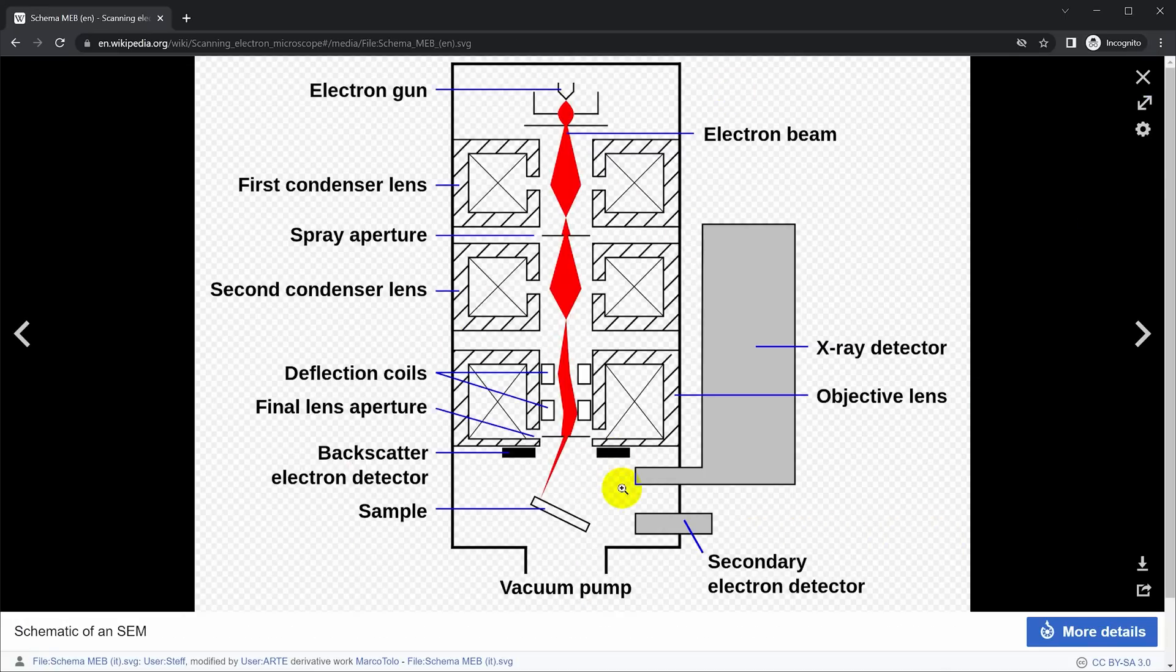The microscope typically has multiple detectors. You have a back scatter detector that's usually an annular ring around where the electron beam comes out that catches back scatter electrons that come straight back. And then you have electron detectors off to the side and x-ray detectors and other kinds of current detectors that will catch electrons that are coming out at low angles or x-rays coming out of the sample or just the current being conducted through the sample. And all this information can be used to create an image.